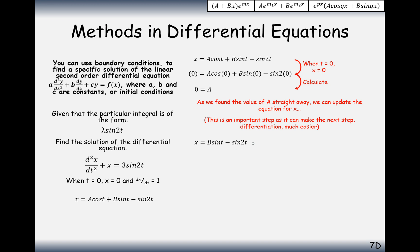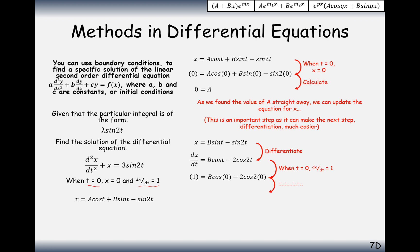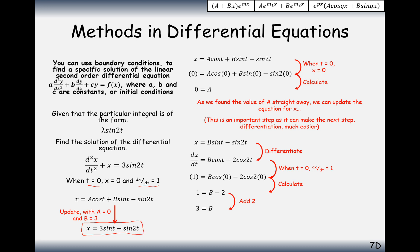With the updated equation, differentiate and plug in t equals 0, dx by dt equals 1. We get 1 equals b minus 2, so b equals 3. The final answer is x equals 3 sine t minus sine 2t. That's the full process: plug in the first pair of initial conditions, differentiate, plug in the second pair, and find your A's and B's.